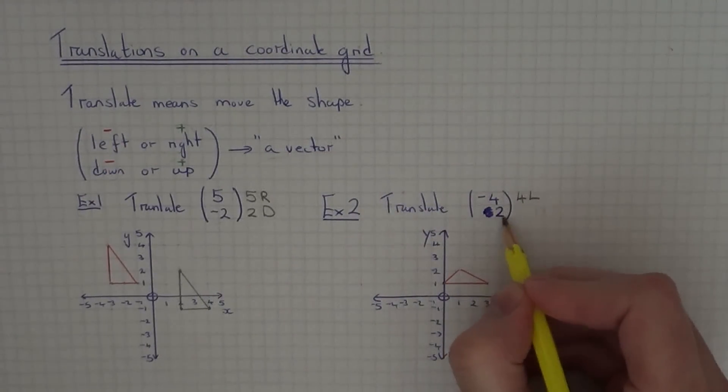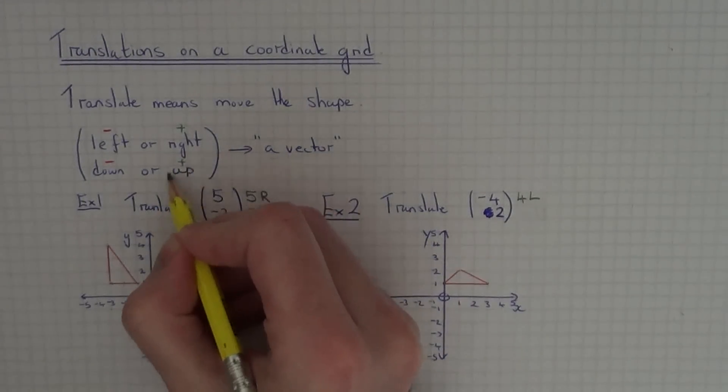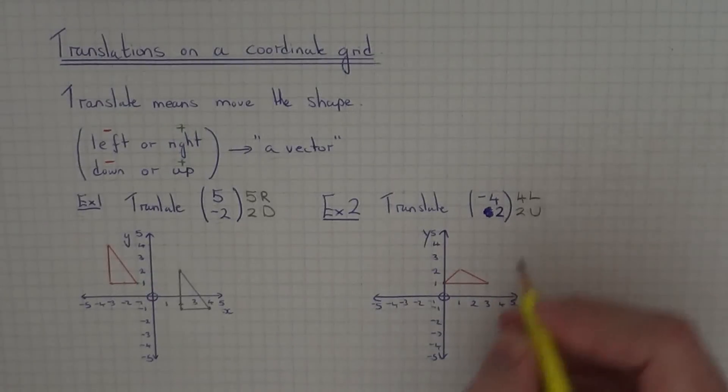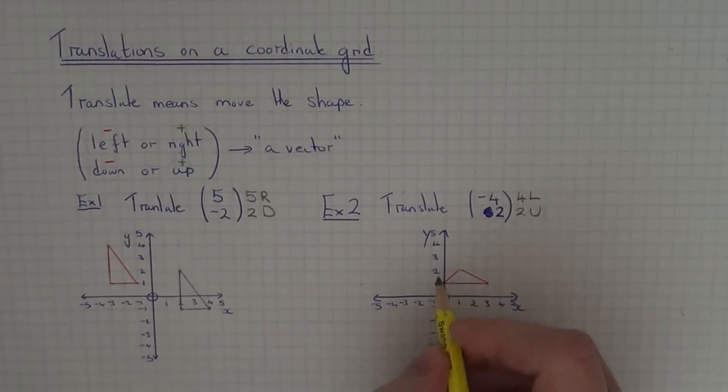And the bottom number of the vector is plus 2, so this means move it 2 up. So again take each corner and move it 4 left and 2 up.